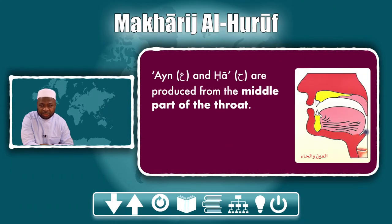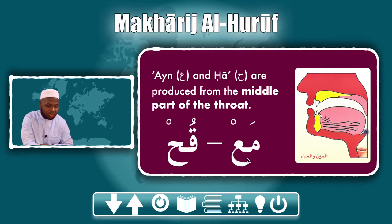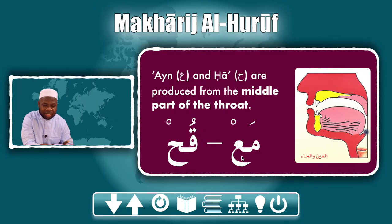ʿAyn and hā are the two letters that come from the middle of the throat. As we mentioned, if you want to identify the point of articulation of any letter, apply silence to it and put any active letter in front — it can be hamza, it can be ya, it can be anything, it can be ʿayn itself. A'...